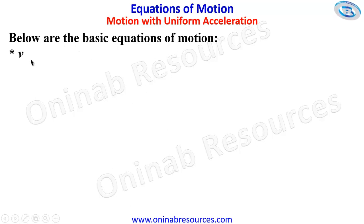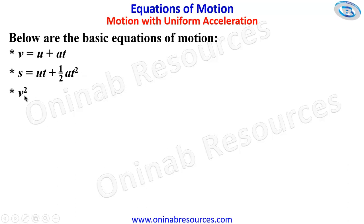V is equal to U plus AT. S is equal to UT plus half AT squared. V squared is equal to U squared plus 2AS. These are the basic equations of motion we are going to be making use of in this tutorial.